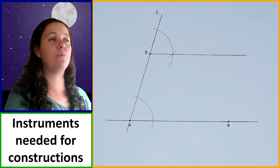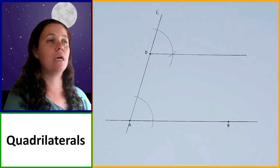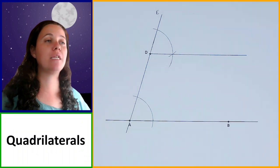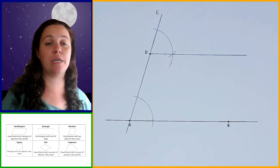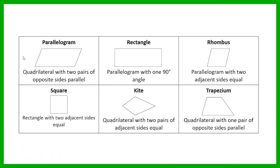Now before we actually do the constructions, let's have a look at the quadrilaterals we're going to be drawing today. The first is the parallelogram — a four-sided shape with two pairs of opposite sides that are parallel. This side and that side are opposite and parallel, and this side and that side are also opposite and parallel. Having both pairs of opposite sides parallel is what makes a quadrilateral a parallelogram.